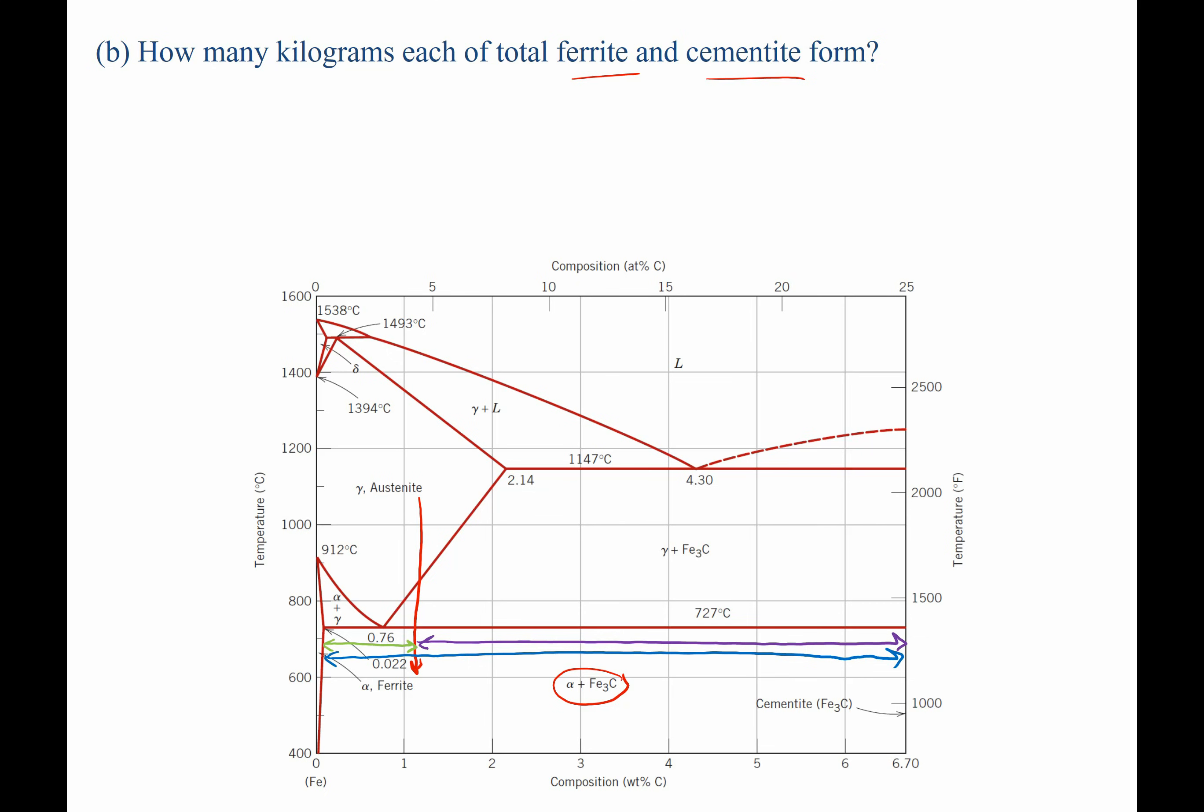If we know those values, we can determine the weight fraction of the different phases. The weight fraction of the alpha phase is just going to be the purple line divided by the blue line, and the weight fraction of the cementite is going to be the length of the green line divided by the blue line. Which mathematically, we can just write using the lever rule. As before, when using the lever rule, we're going to take the portion of the line opposite of the phase we're interested in. So if we want to know how much weight percent alpha, then we want the length of the line opposite of it, which is the purple length.